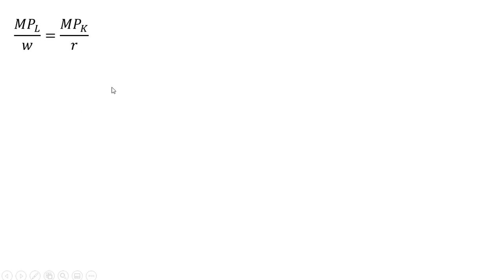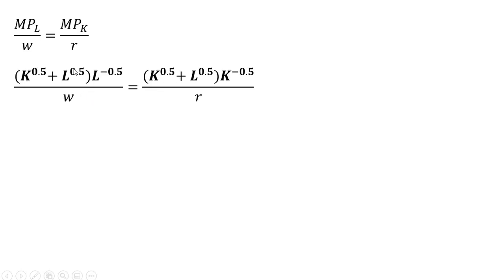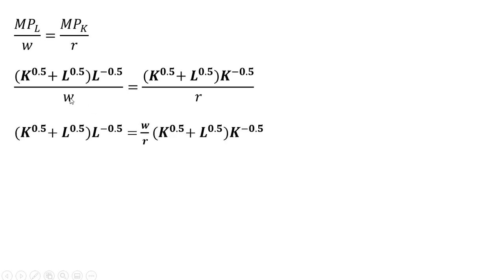Moving on, setting up our cost minimizing condition: the marginal product of labor divided by the wage equals the marginal product of capital divided by the price of capital. I'm going to substitute in the marginal product of labor and the marginal product of capital that we just found. I'll substitute in the wage and price of capital at the end. Now simplifying by multiplying through by W, and you'll notice we can cancel the terms in parentheses on both sides.